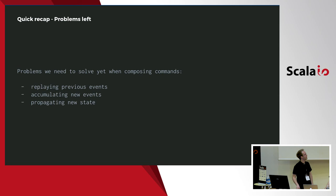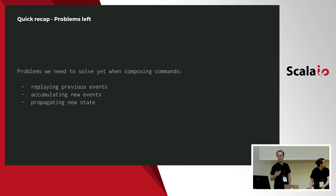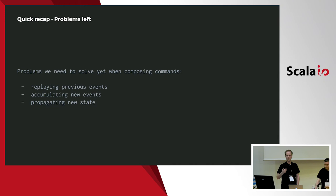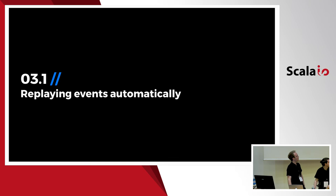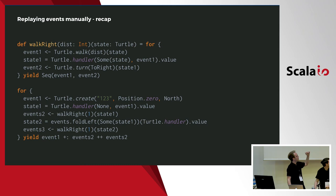Basically, we have three problems to solve. The first is the need to replay intermediate events at every step. The second problem is accumulating intermediate events in the right order. And third, propagating state from step to step in a correct way. Let's start with the first one: replaying events automatically.